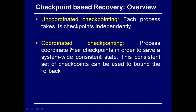In coordinated checkpointing, P1, P2, and P3 try to take the checkpoint at the same time. Since time is not synchronized between processes in a distributed system, the coordination is performed via message passing — they pass messages to each other saying 'I'm taking a checkpoint, you should also take one.' We'll start with uncoordinated checkpointing first.